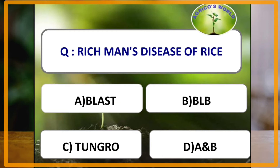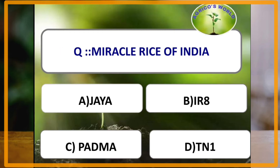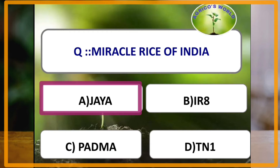Blast is known as the rich man's disease of rice. It is caused by Pyricularia grisea, with the sexual stage Magnaporthe grisea. The miracle rice of India is Jaya, a semi-dwarf variety developed in India. It is a cross between TN1 and T141.